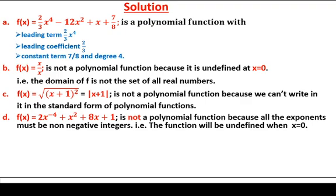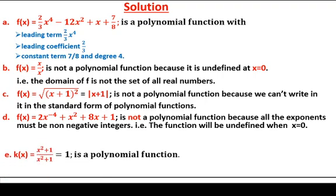Example d: f(x) = 2x⁻⁴ + x² + 8x + 1. We said the exponents must be from the set of non-negative integers, but here we have −4. Since −4 is not an element of the set of non-negative integers, this function is not a polynomial function.